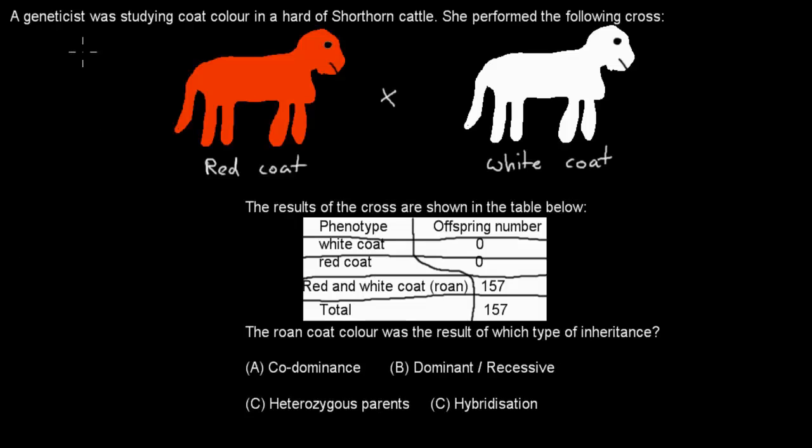Next question is: A geneticist was studying the coat color in a herd of shorthorn cattle. She performed the following cross: red coat with white coat. The results of the cross are shown in the table below. We've got the phenotype and the offspring here. So white coat, red coat, red and white coat or roan, total. So the offspring had none of them were white or red. All of them were red and white coat. The roan coat color was the result of which type of inheritance? Co-dominance, dominant recessive, heterozygous parents, or hybridization. And when ready, pause the video and attempt the question.